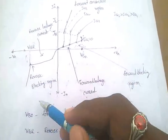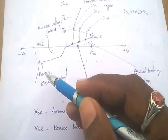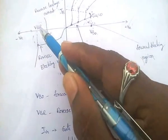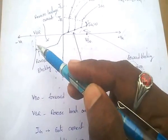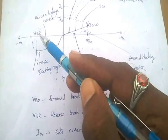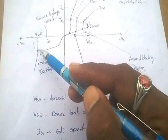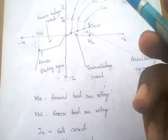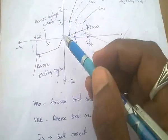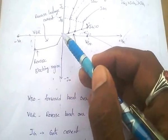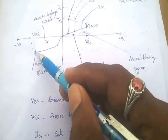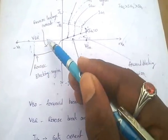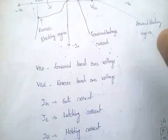In the reverse blocking region, when the negative voltage increases to the reverse break-over voltage, it breaks over and the SCR starts conducting. This region is called the reverse blocking region, and the corresponding current is called reverse leakage current.